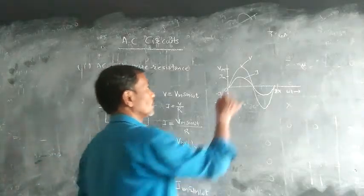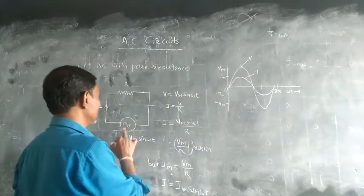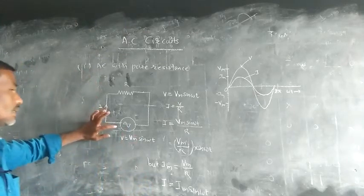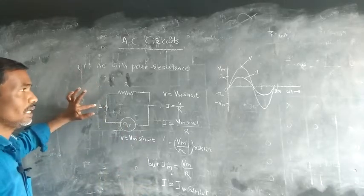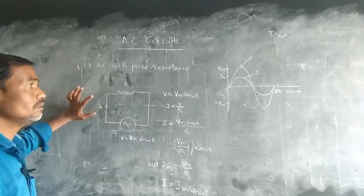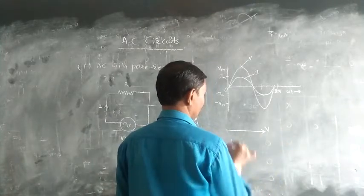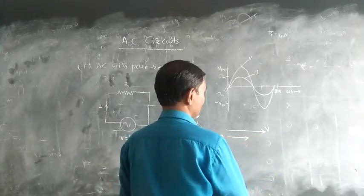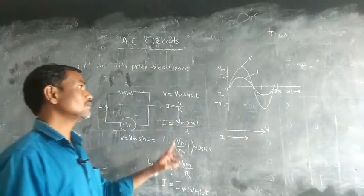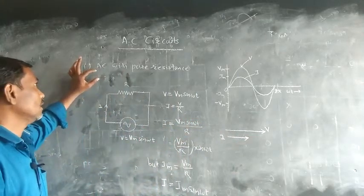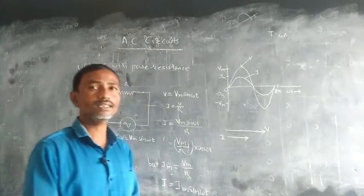The voltage and current are in phase. When a pure resistance is connected across an AC source, the voltage and current are in phase with each other.